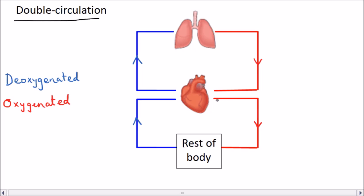The blood is now oxygenated, which means it has plenty of oxygen in it. The heart then pumps the oxygenated blood around the body. The oxygen goes to the cells, the cells use the oxygen, and now the blood is deoxygenated and flows back to the heart, and then the whole cycle starts again.